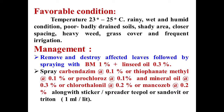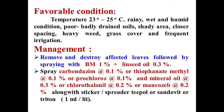Favorable conditions required for the development of Sigatoka disease include a temperature range of 23 to 25 degrees Celsius, along with rainy, wet, and humid climate. Poorly drained soil, shady areas, dense plantation, and heavy weed infestation also lead to predominantly increased disease development.